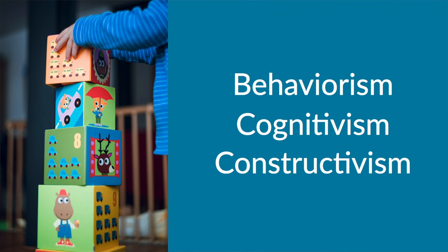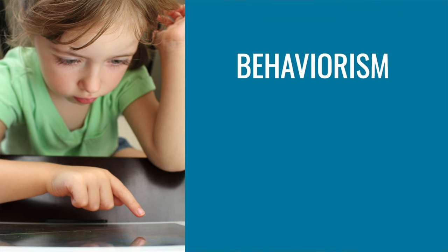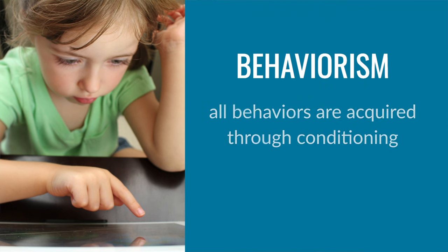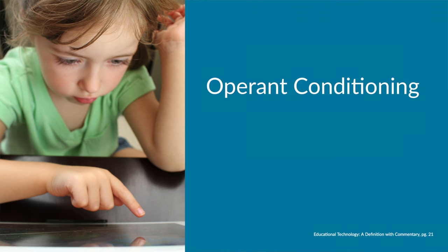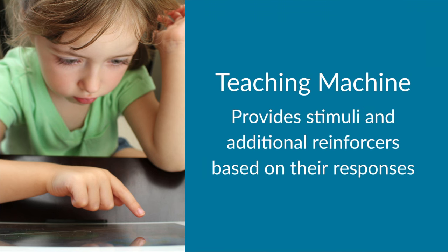Looking at how tech facilitates learning through the lenses of these theories, let's discuss what each of these theories are all about and the perspectives of each theory regarding edtech. Behaviorism is a theory of learning based on the idea that all behaviors are acquired through conditioning. Within this theory, there is operant conditioning, where a behavior is learned through a stimulus, which leads to a response, and then the stimulus that follows that response. BF Skinner, a behaviorist, implemented operant conditioning into academic learning, which is called programmed instruction. This type of instruction involves the use of a mechanical device — a teaching machine — that provides stimuli to students and additional reinforcers based on their responses.